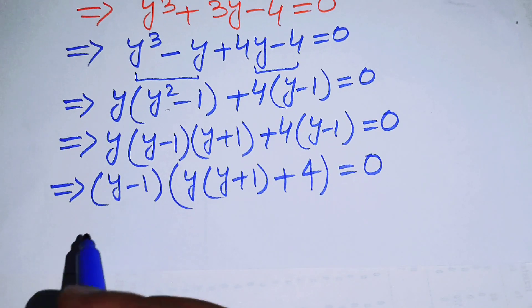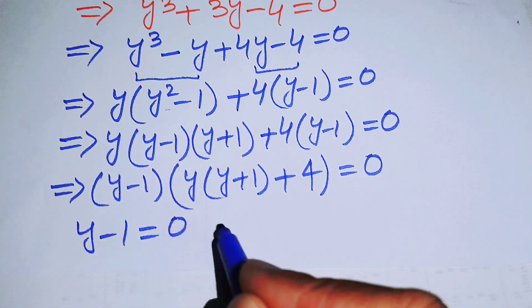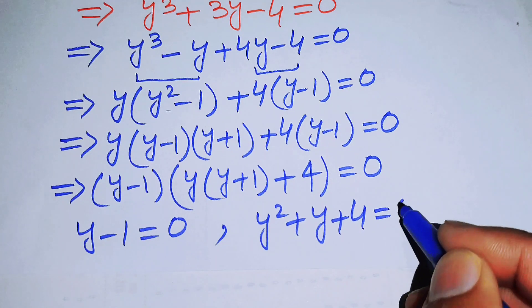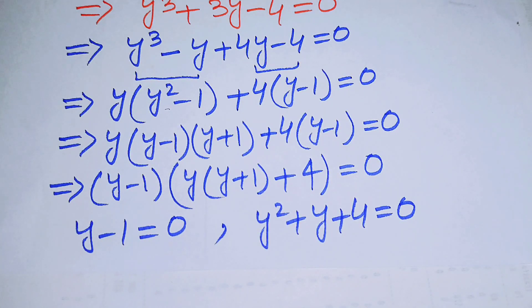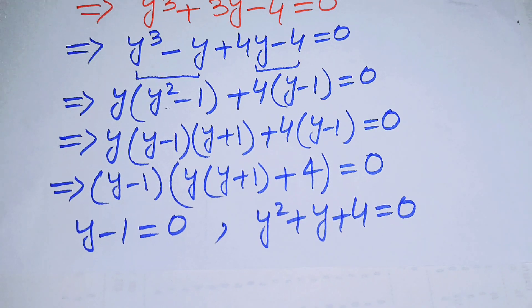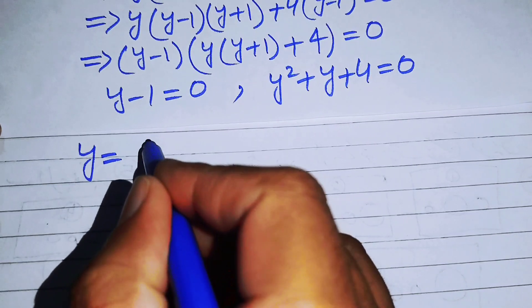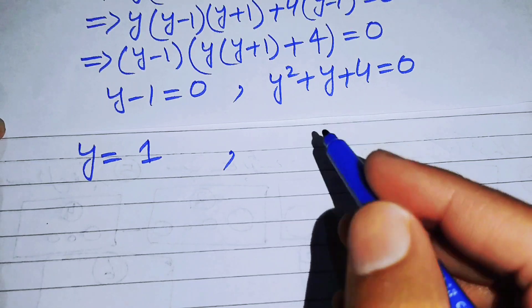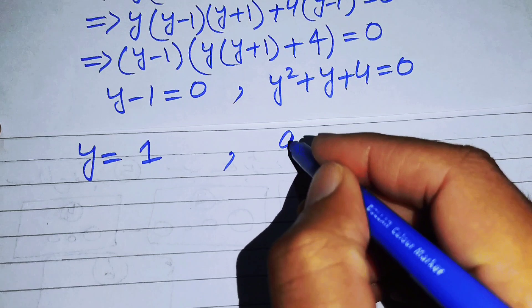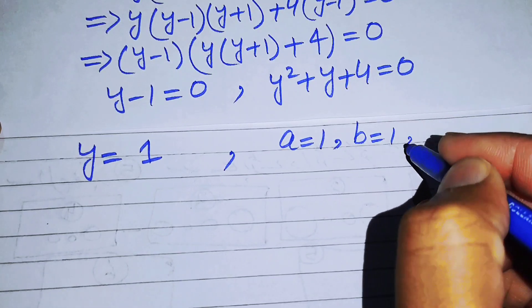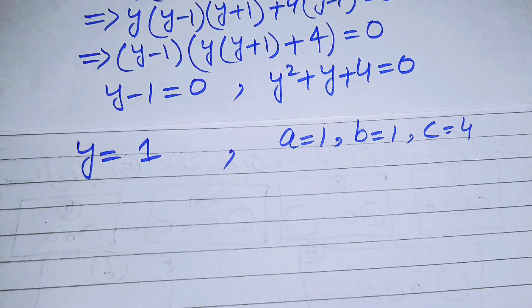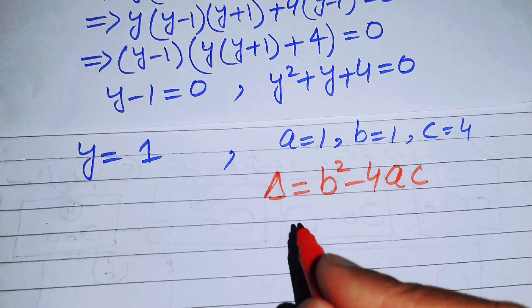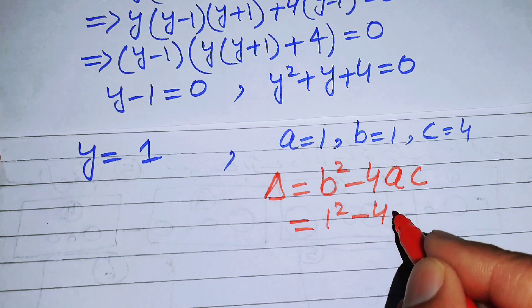This gives two cases. Case 1: y−1 = 0. Case 2: y²+y+4 = 0. We solve for real values of y. From Case 1, y = 1 easily. For Case 2, we check the discriminant: a = 1, b = 1, c = 4, so Δ = b²−4ac = 1²−4(1)(4).